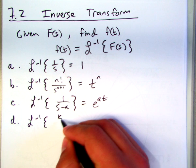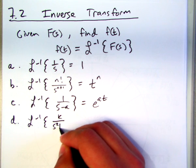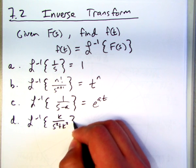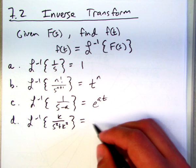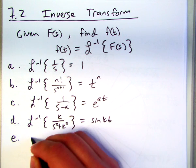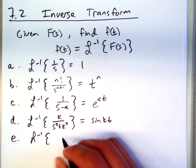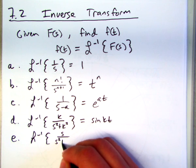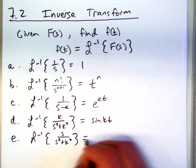Next was k over s squared plus k squared, and that was sine of kt.